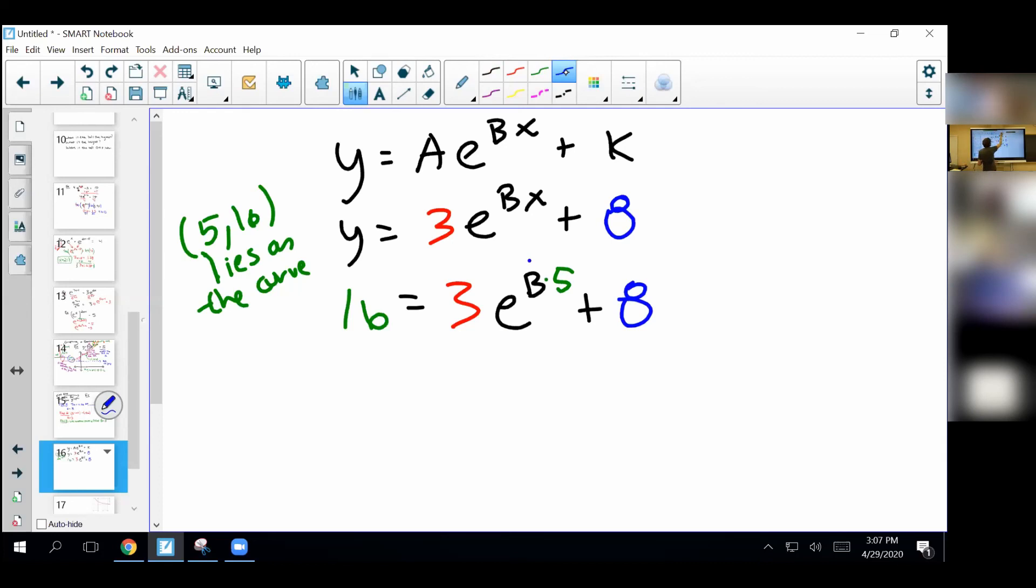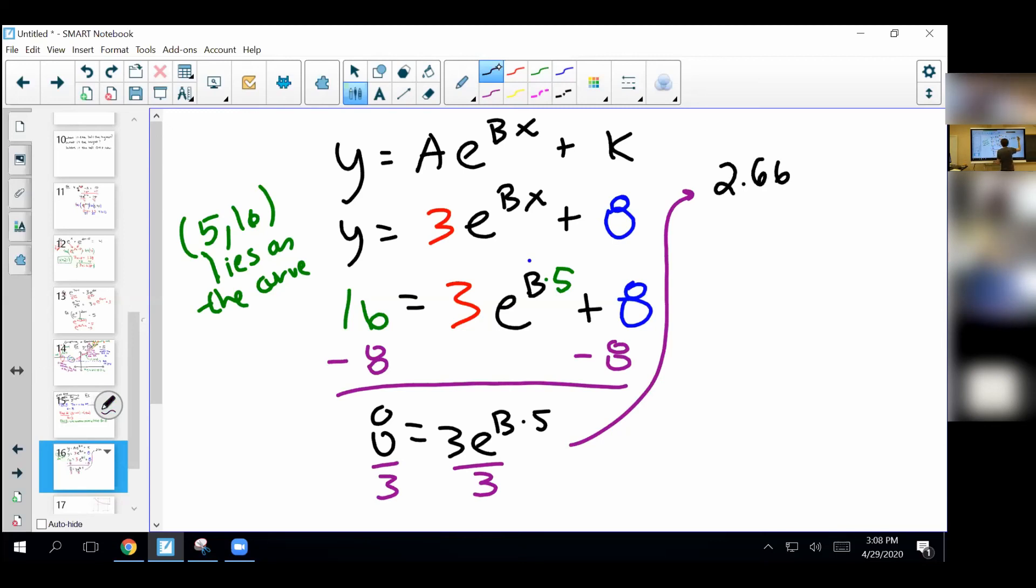So from here we can kind of just solve for b and we should be good. So let me do that. Let's subtract eight from both sides. We're going to get eight is equal to three e to the b times five. Divide by three, let me come up here, get 2.66 is equal to e to the b times five. And at this point I've actually isolated my e so I can apply the natural log to both sides. I'm going to get, I don't know what this is, I might just leave it like this for now, but I know these cancel. The natural log and the e cancel so we get b times five and we can just divide by five from both sides. We get b is equal to the natural log of 2.66 over five.